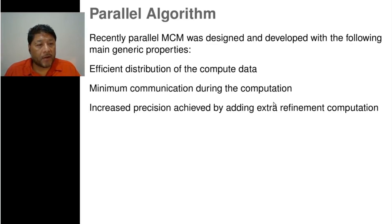Parallel algorithm. Recently, Parallel Monte Carlo Methods was designed and developed with the following main genetic properties: efficient distribution of the compute data, minimum communication during the computation, and increased precision achieved by adding extra refinement computation.